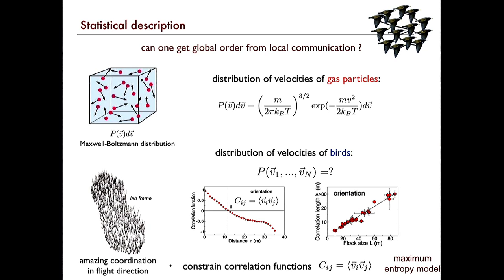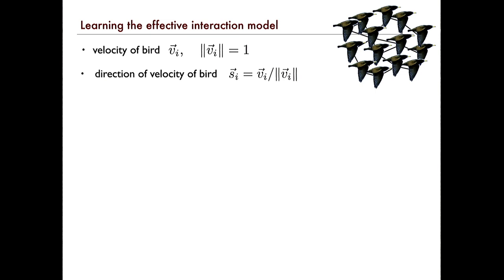How are we going to do it? In general, we're going to assume the most general possible model, but still ask that it reproduces certain features of the data — such as the correlation function. So we're going to constrain the correlation functions of the velocities of the different birds. Now I'm going to go into a few slides of gory details.